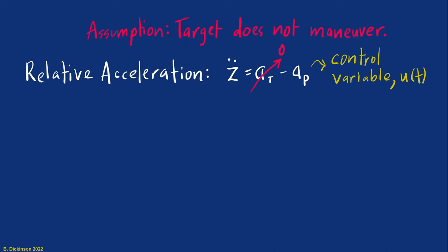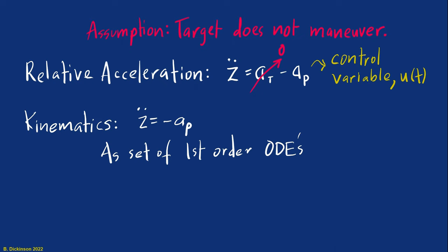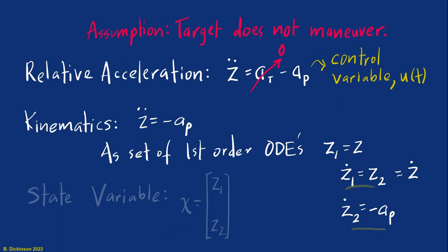So if our kinematics are just Z double dot is equal to minus AP, then we can rewrite this as a set of first-order ordinary differential equations with some intermediate variables, such as Z1 equal to Z, and then Z1 dot is equal to Z2, which is equal to Z dot. And then finally Z2 dot is equal to minus AP, which means that our state variable, we'll call it X with the components Z1 and Z2, or relative position and relative velocity, respectively.